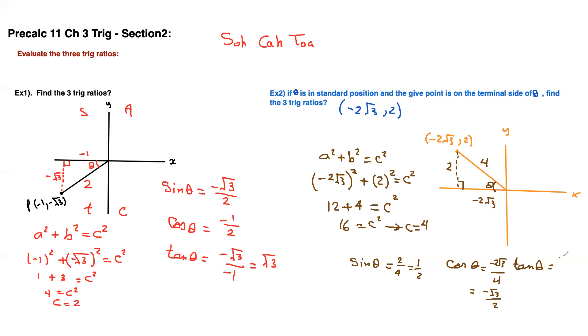And tan theta equals opposite over adjacent, so 2 over negative 2 root 3. We don't like the negative on the bottom and that reduces, so I'm just going to make this negative 1 over root 3. Or if you want to rationalize the denominator, multiply this by root 3, this by root 3, and you end up with negative root 3 over 3.